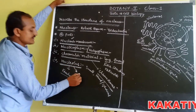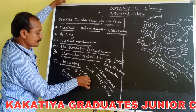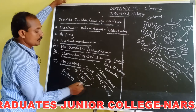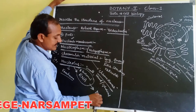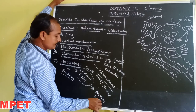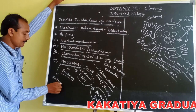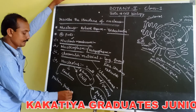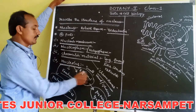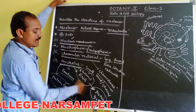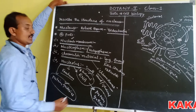Nucleolus involves the synthesis of ribosomal RNA. It is the site of ribosomal RNA synthesis. Due to the presence of ribosomal RNA, the nucleolus involves protein synthesis. Hence, nucleolus is also called the protein factory.